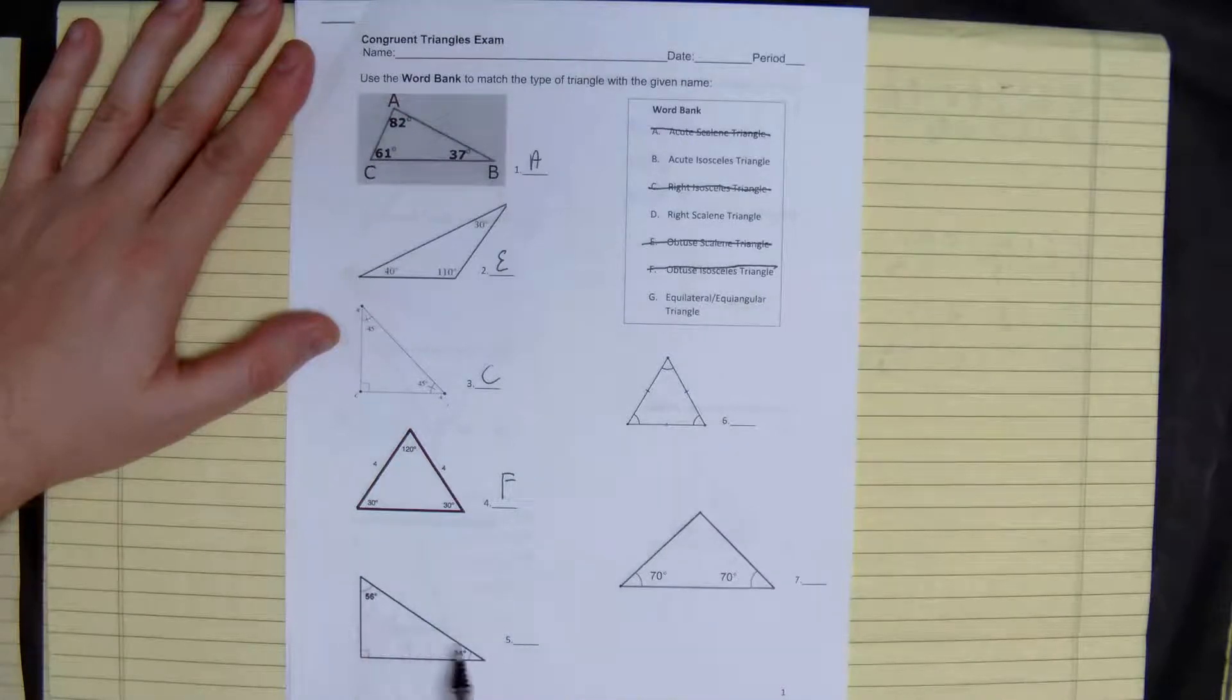Here, we have a right triangle with two different angles, therefore we have a right scalene.